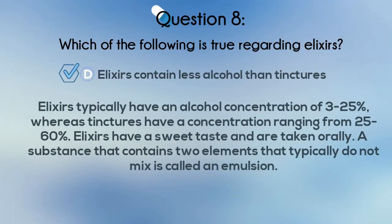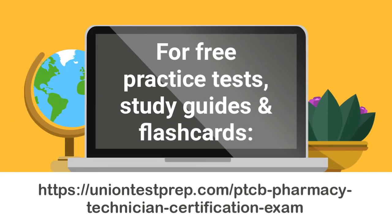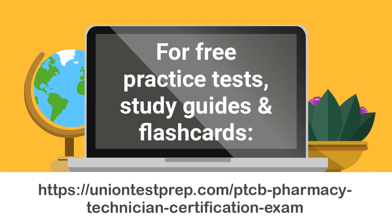The correct answer is D. Elixirs typically have an alcohol concentration of 3–25%, whereas tinctures have a concentration ranging from 25–60%. Elixirs have a sweet taste and are taken orally. A substance that contains two elements that typically do not mix is called an emulsion. For free practice test study guides and flashcards for the Pharmacy Technician Exam, please visit us at uniontestprep.com/PTCB Pharmacy Technician Certification Exam.